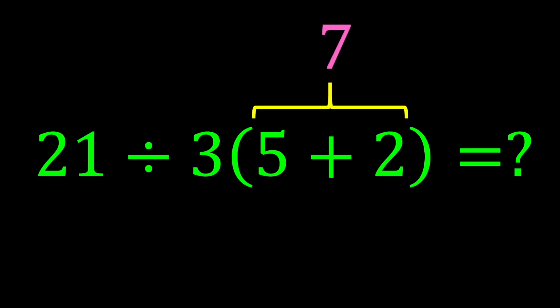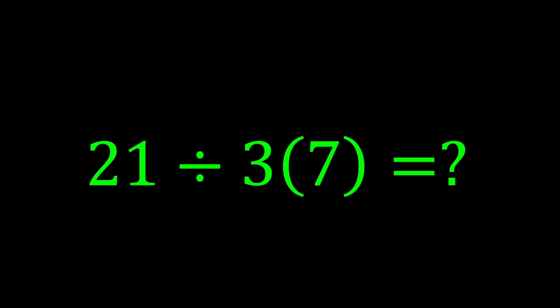According to PEMDAS, first we must calculate what is inside the parentheses. 5 plus 2 gives us 7. The expression becomes 21 divided by 3 multiplied by 7.